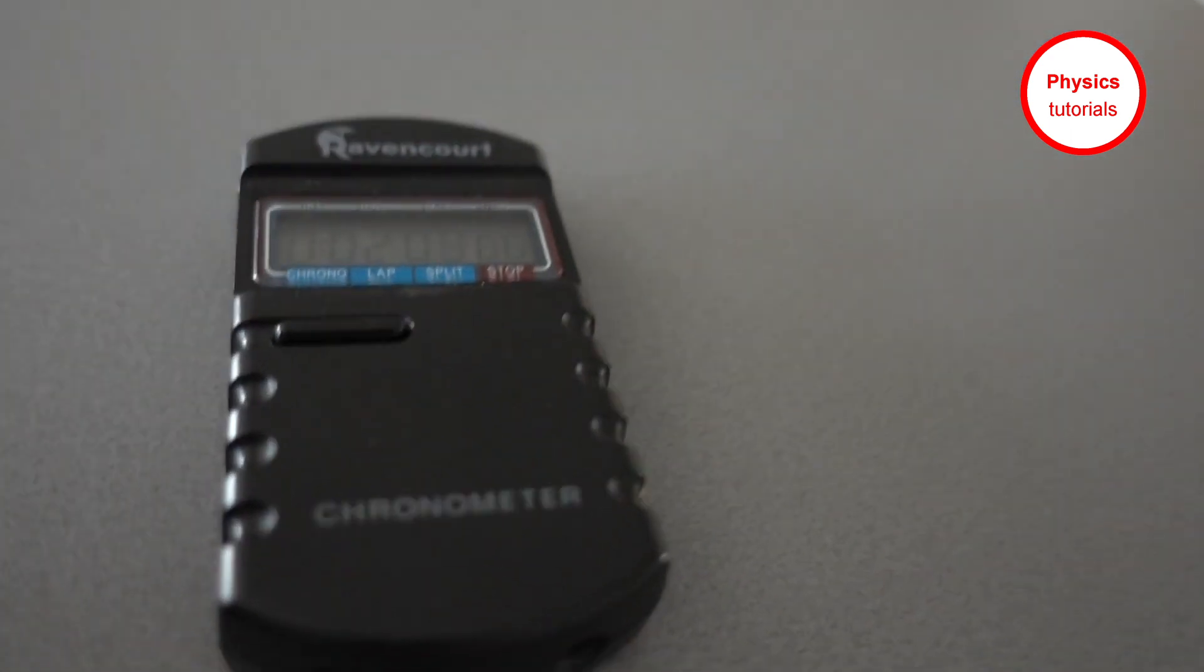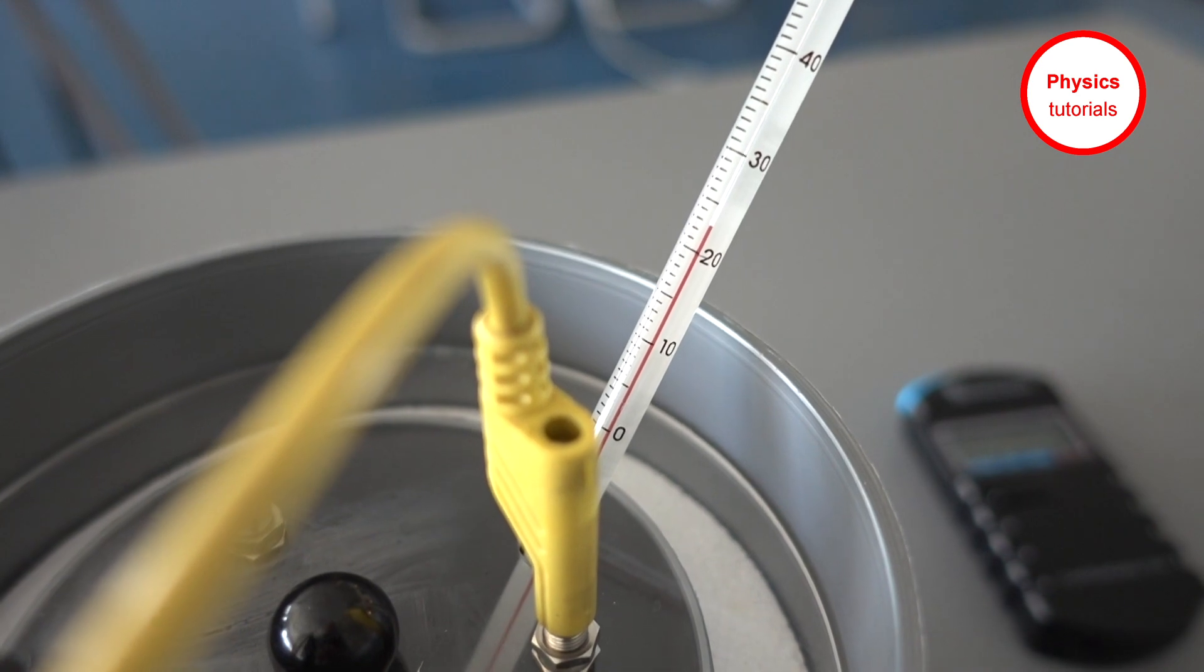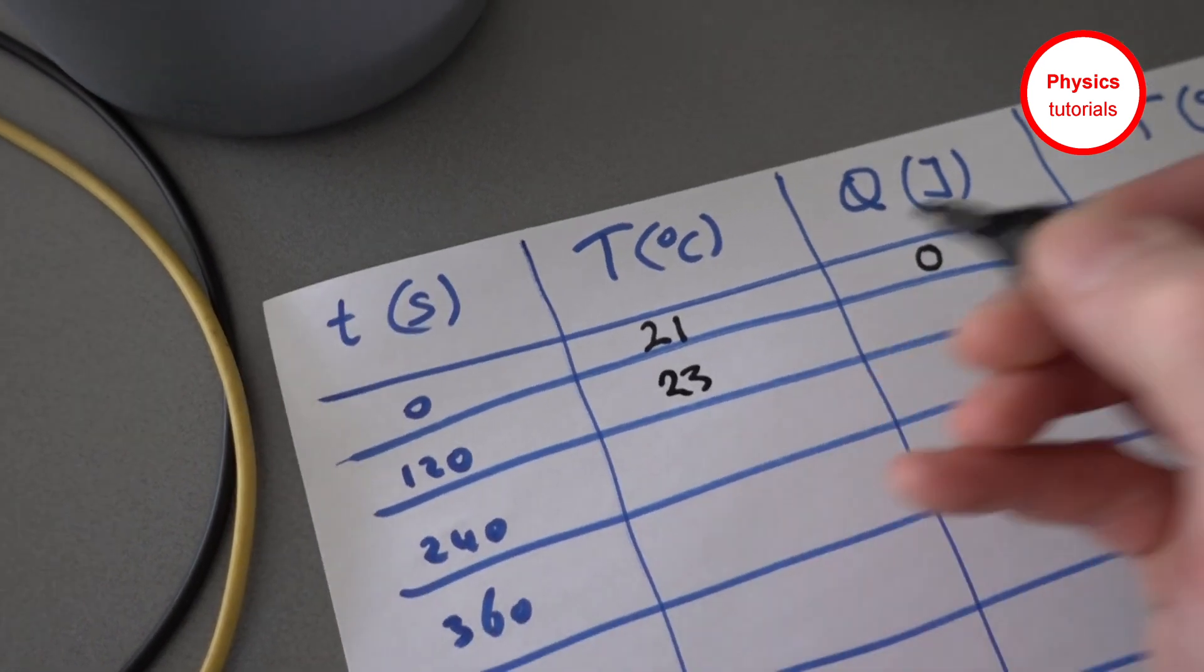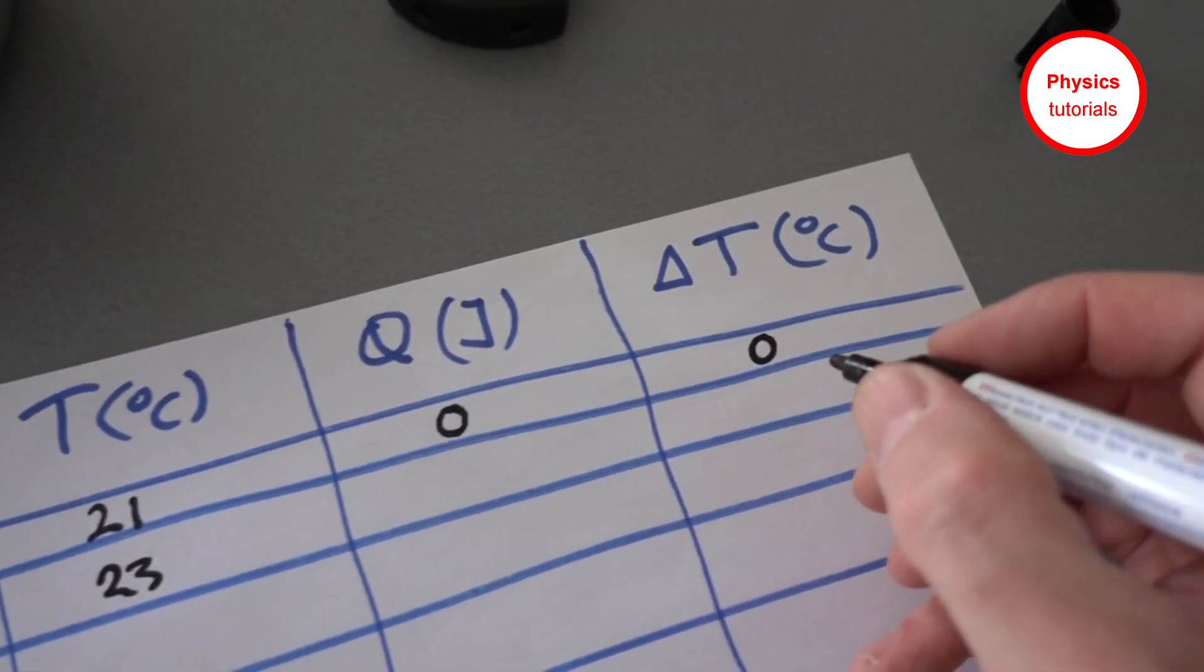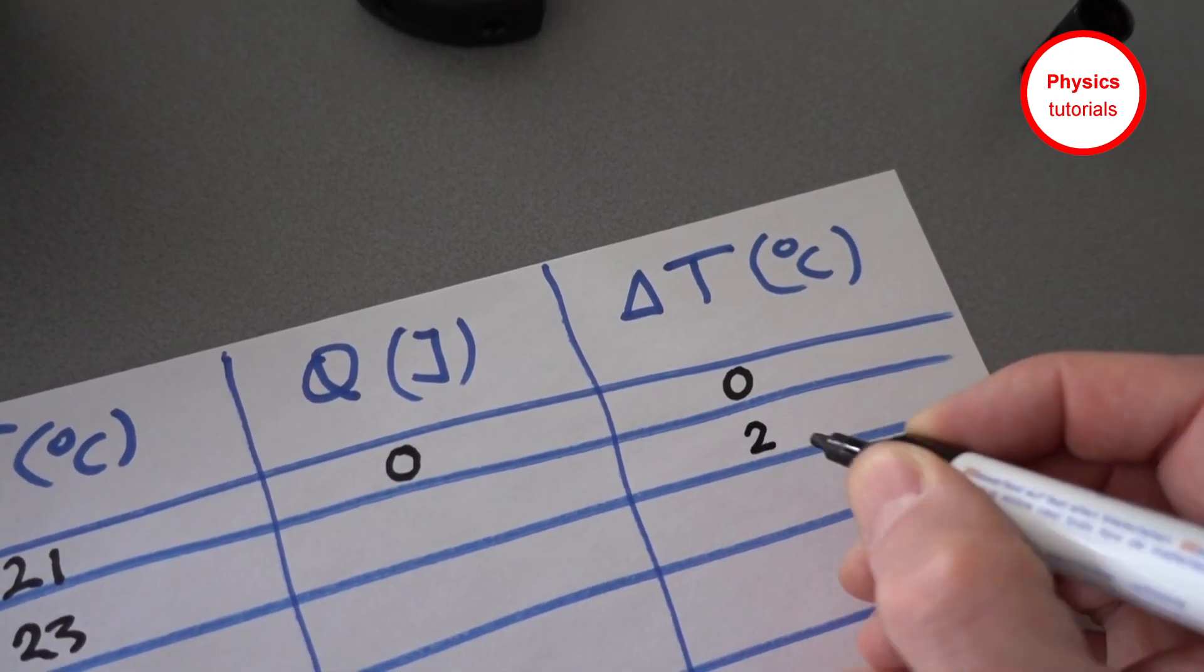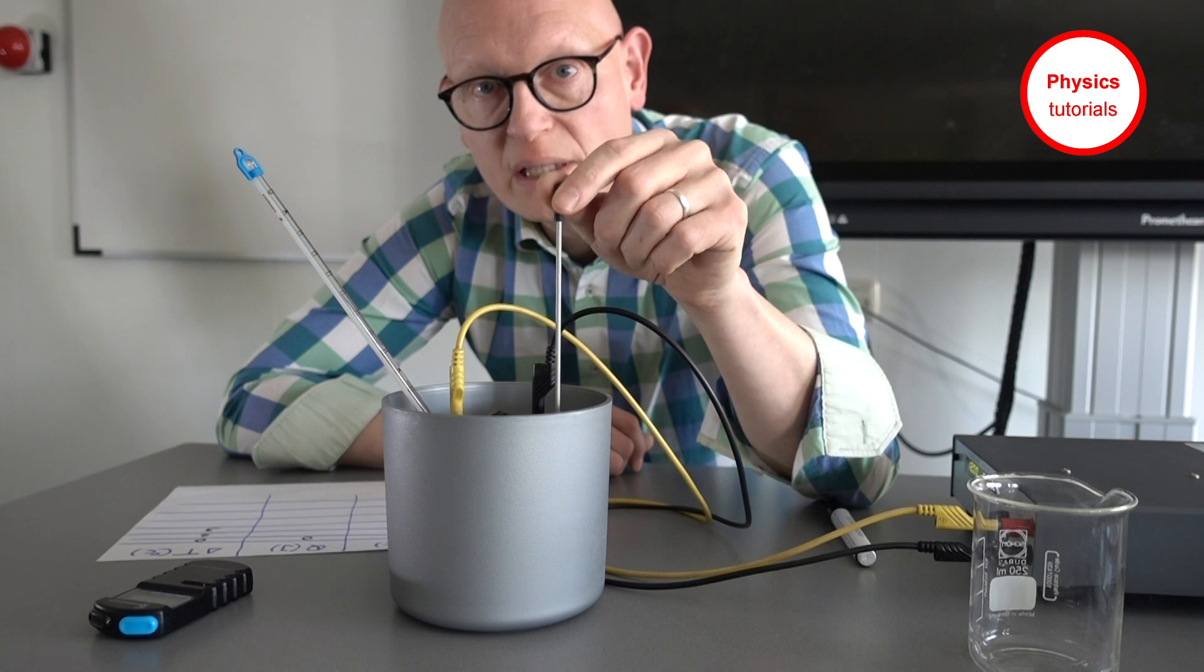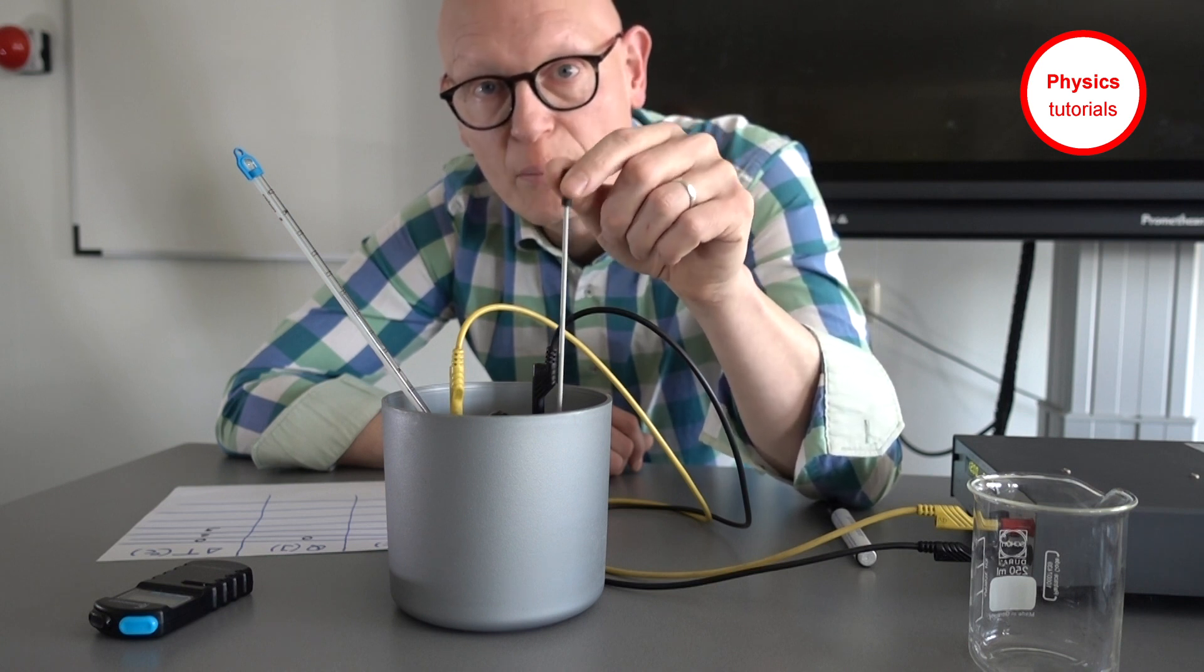So at two minutes the temperature is 23 degrees Celsius. I write down 23 and I can also write down the temperature difference, which is 2 degrees Celsius. Don't forget to stir the water a little bit to get an accurate temperature reading.